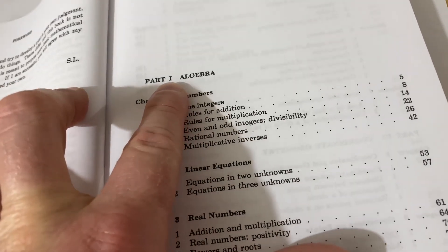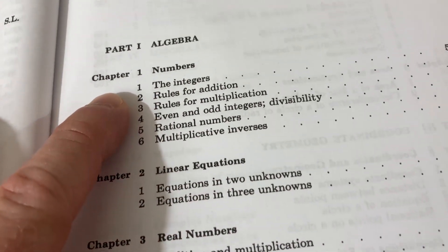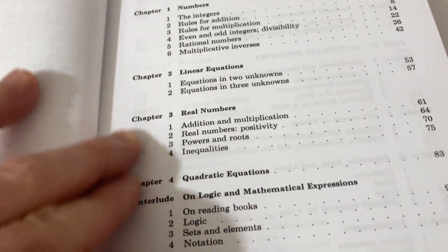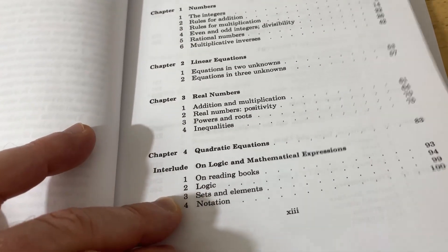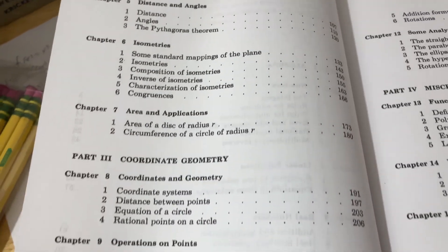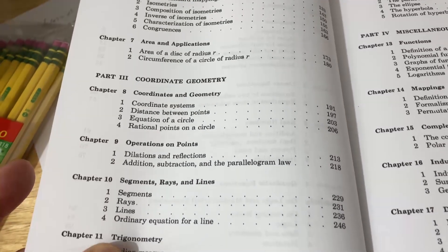And I finally got it. So part one is algebra. Starts with numbers, linear equations, and real numbers. So really basic math. Then you have some quadratic equations. And then intuitive geometry. What an interesting name, right? Coordinate geometry. So all very basic math.